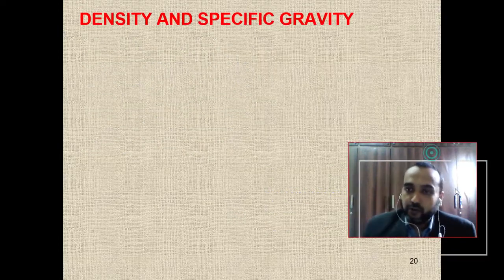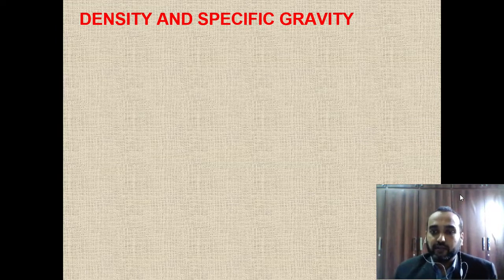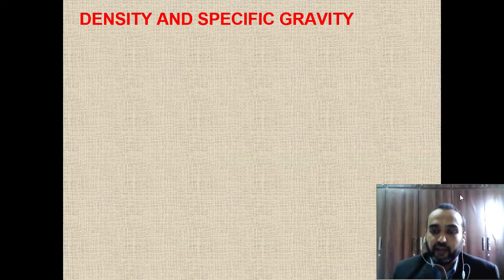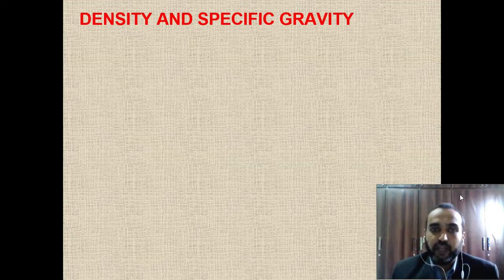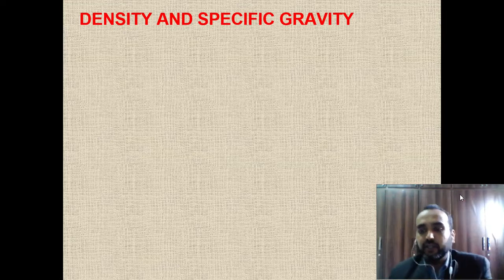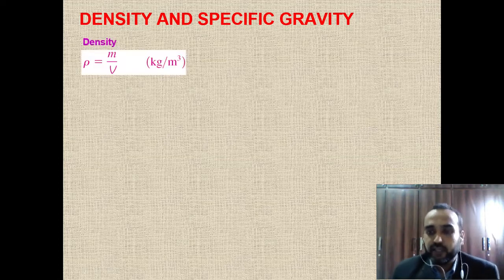Now the basic properties. Mass is simply the amount of matter, measured in kilograms (kg) in the SI system. Volume is the space occupied by a substance, with SI unit of meter cubed (m³). Density is the ratio of mass to volume, with units of kg/m³.